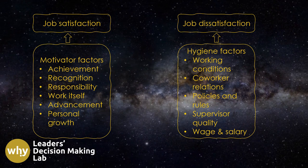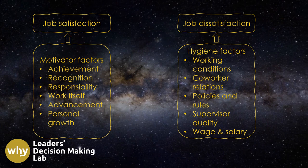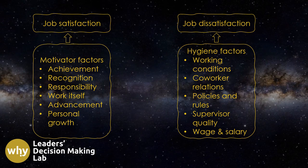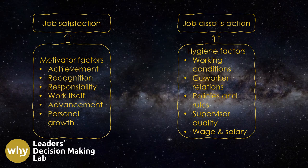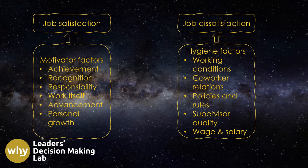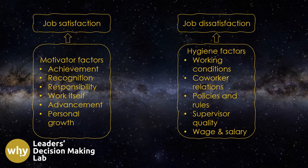The term two-factor theory refers to Herzberg's conceptualization of two distinct categories of factors that influence job satisfaction and dissatisfaction. These categories are motivators — factors that contribute to job satisfaction — and hygiene factors — factors that, when absent or inadequate, lead to job dissatisfaction. So while there are indeed 14 factors studied in Herzberg's research, they are classified into two overarching categories within the two-factor theory.